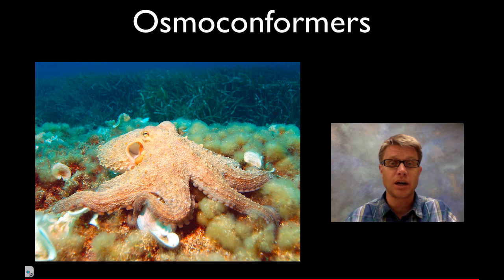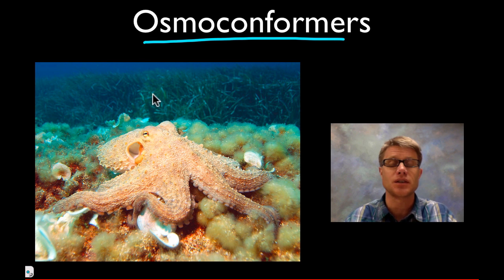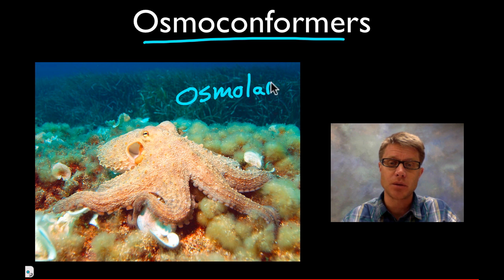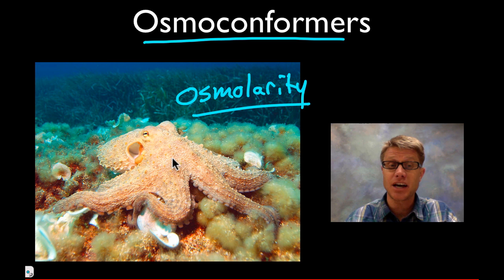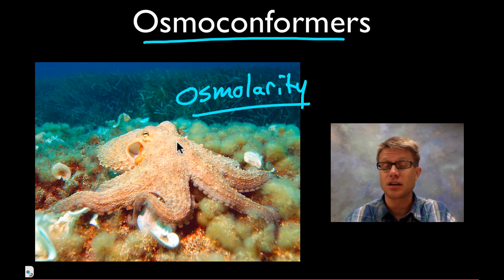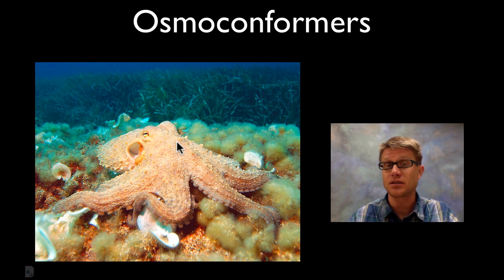So what are the two life strategies? Well, some organisms have decided this is too much effort. They are called osmoconformers. An osmoconformer, like an octopus, has an osmolarity — the concentration of solutes to water — that is the same on the outside as it is on the inside. They're just going to match the osmolarity of their surroundings. It's nice because they don't have to regulate it, but the downside is you get big swings that can affect the rest of the organism.